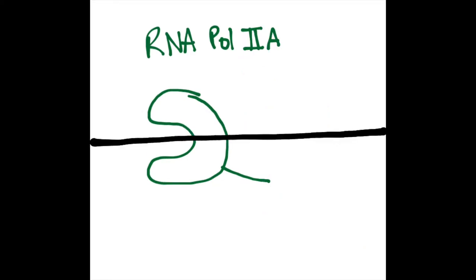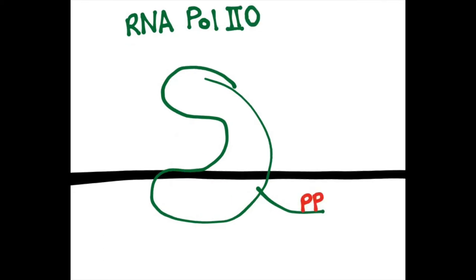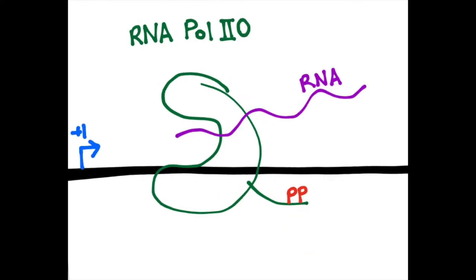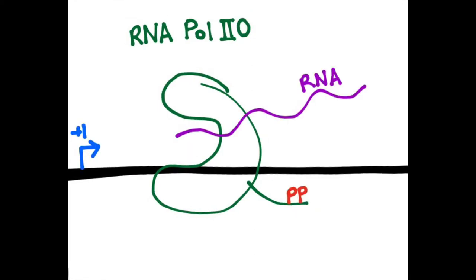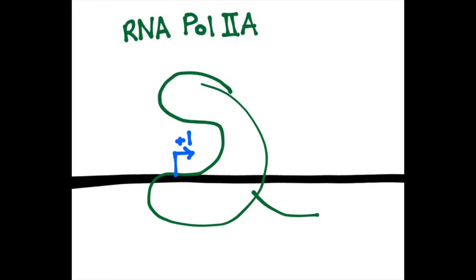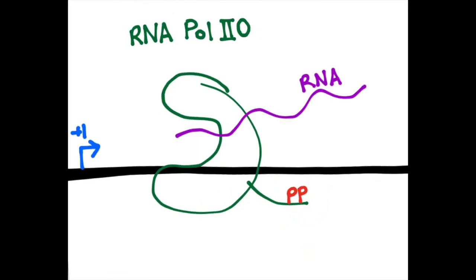IIa is responsible for initiation of transcription, and IIo, the phosphorylated form, is responsible for RNA chain elongation. This indicates that phosphorylation of the complex occurs sometime between forming the initiation complex and promoter clearance, and it is what allows RNA polymerase II to switch from initiation to elongation.